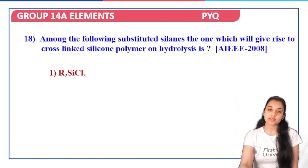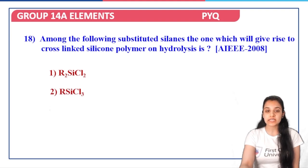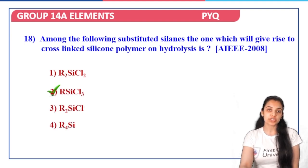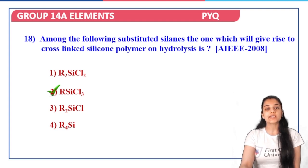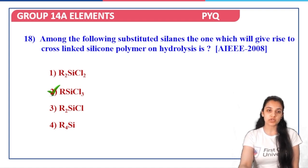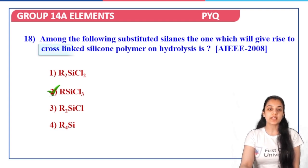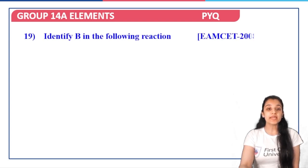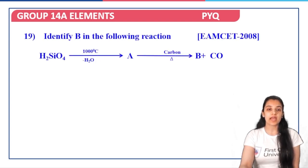Next: among the following substituted silanes, which will give rise to a cross-linked silicone polymer on hydrolysis? We have discussed this — it is RSiCl3 that gives rise to a cross-linked silicone polymer. So option two is the correct answer.